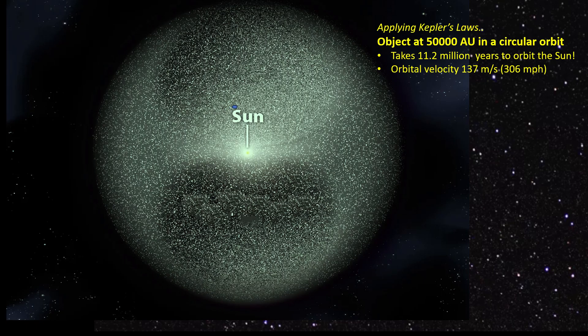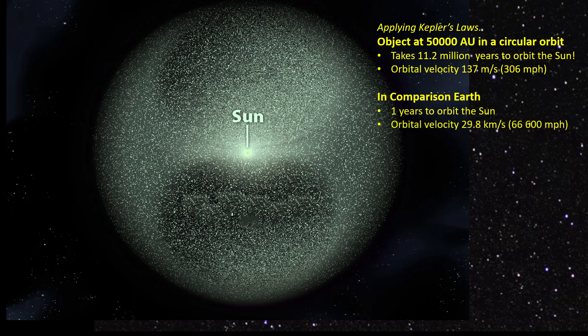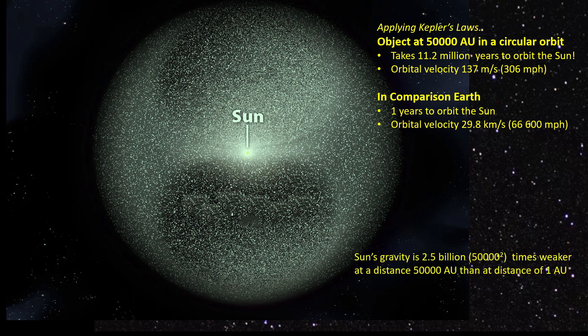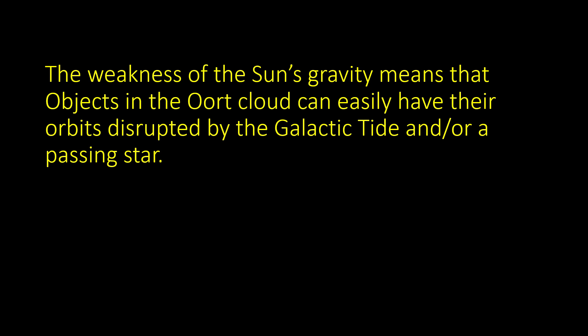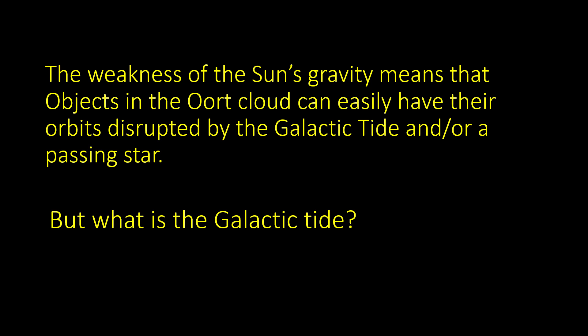An object in the outer region of the Oort cloud is very weakly bound to the Sun. At 50,000 AU, it takes 11.2 million years to go around the Sun in a circular orbit, compared to one year which it takes the Earth. The Sun's gravity at this distance is 2.5 billion times weaker than it is at the Earth's distance from the Sun.